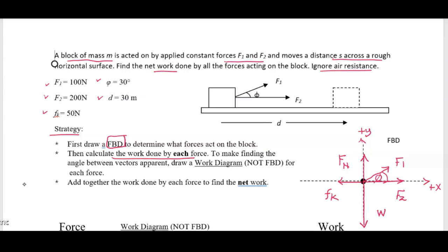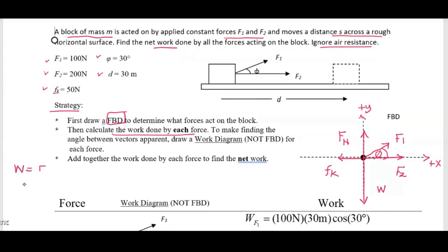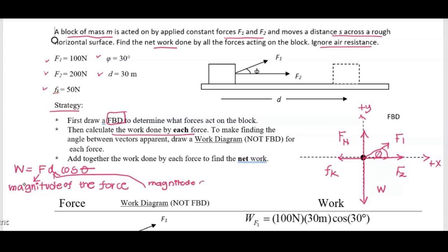Now let's see the second step: we have to calculate the work done by each force. The equation is: work equals force times displacement times cosine theta. This force is just the magnitude of the force, and D is just the magnitude of the displacement. Theta is the angle between the force vector and the displacement vector. You don't have to put the negative sign for the force or the displacement because they are scalars — the angle will take care of the sign. Just put the magnitude of the force vector and the magnitude of the displacement vector.